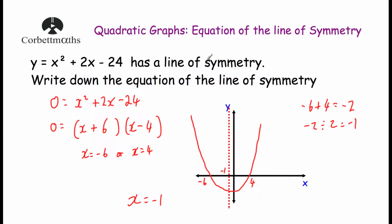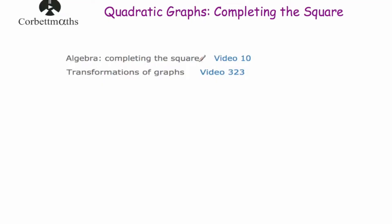We've looked at how to find the equation of the line of symmetry for quadratic graphs that have been drawn for us, or for quadratics that cross the x-axis. Now let's look at a technique using completing the square and transformations of graphs. There are two videos you'd need to watch first: video 10 on completing the square, and video 323 on transformations of graphs. I'll take it that you know those two topics throughout this explanation.